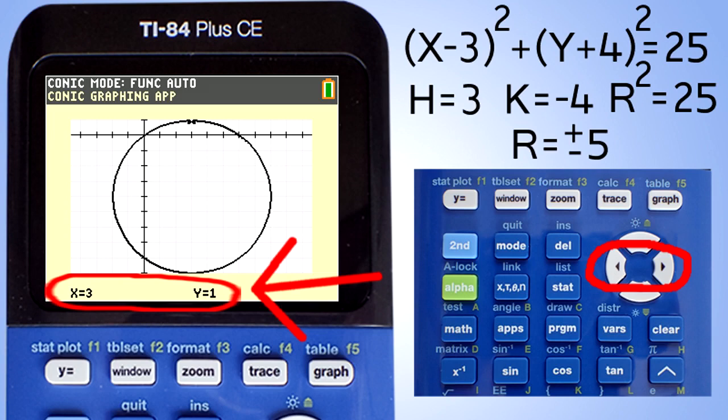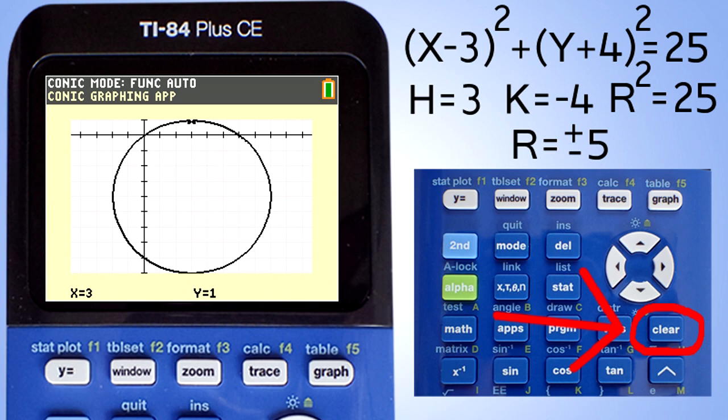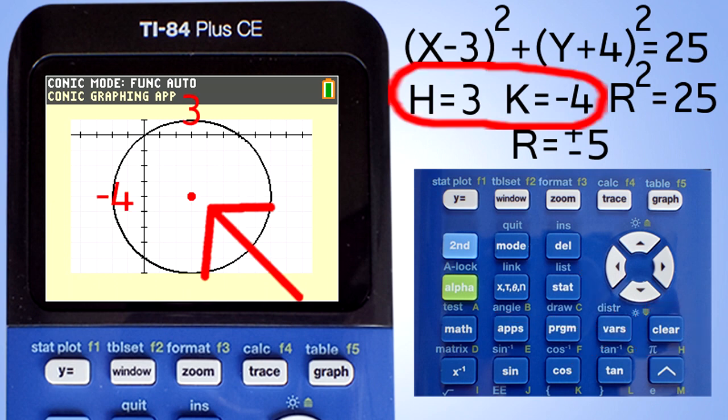To escape out of the trace, press this Clear button here. Remember, the center of a circle is at H, K. In this equation, the center of our circle is at (3, -4).